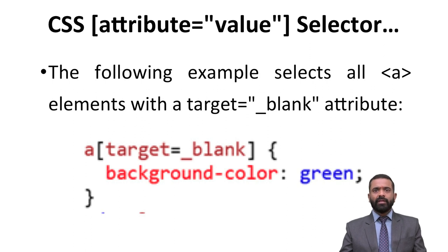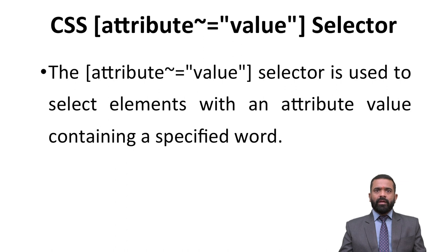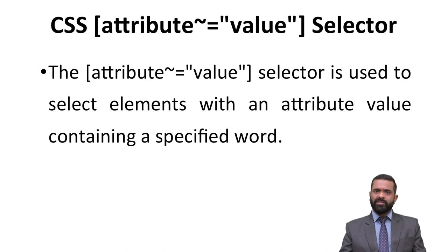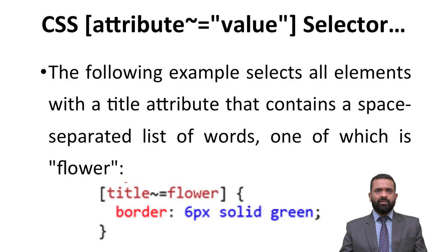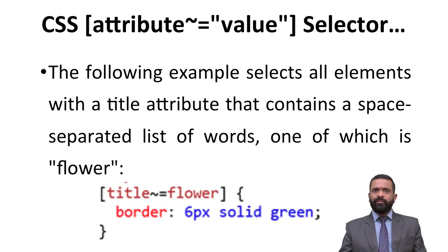The attribute tilde-equals value selector is used to select elements with an attribute value containing a specified word. The following example selects all elements with the title attribute that contains a space-separated list of words, one of which is 'flower'. So [title~=flower] with border 6px solid green selects elements where the title contains the word 'flower' among space-separated values.